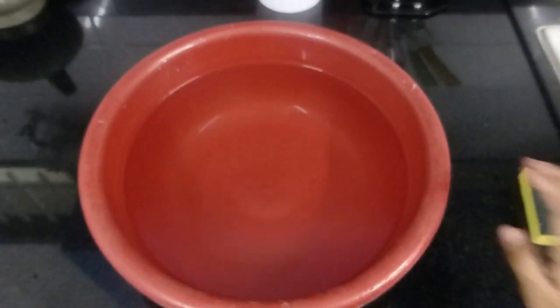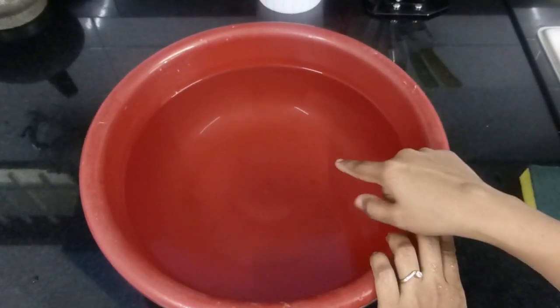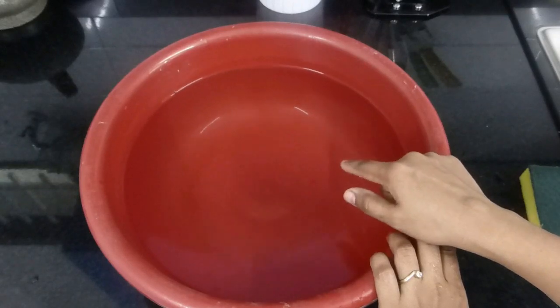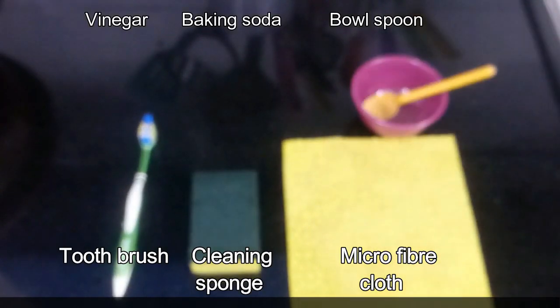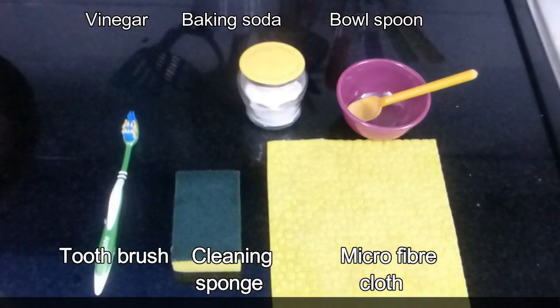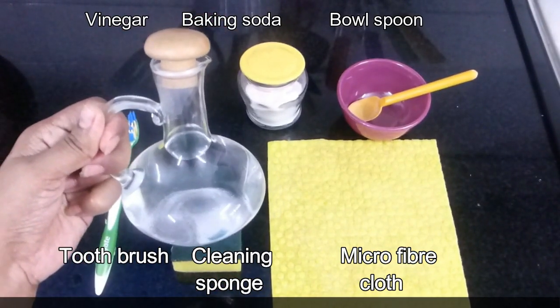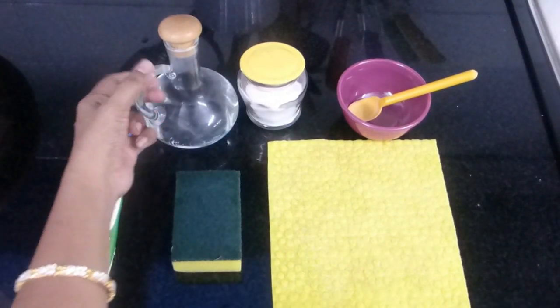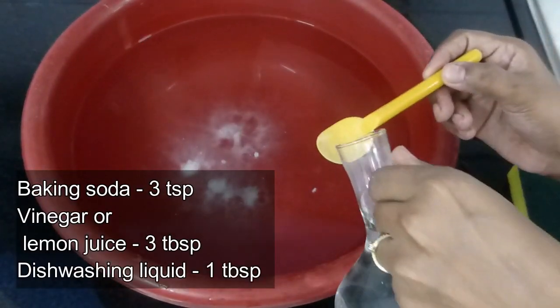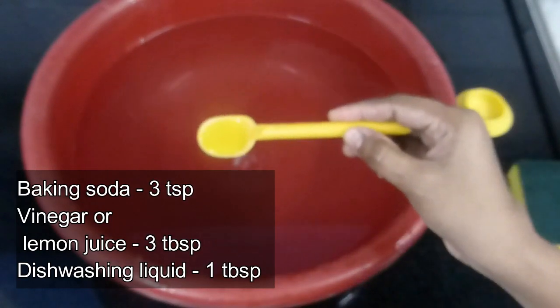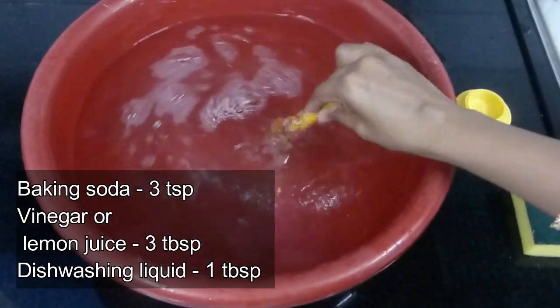So here I have a wide bowl with 5 liters of hot water. Make sure you are using a wide bowl like this so that you can put all the burners and stands everything inside. So you will also need an old toothbrush, cleaning sponge, microfiber cloth or paper towel, bowl and spoon, baking soda and vinegar. So you can replace vinegar with fresh lemon juice as well but I don't have lemon now so I am using vinegar. So first into your bowl with hot water add 3 teaspoons of baking soda, 3 tablespoons of vinegar and just 1 tablespoon of dishwashing liquid.